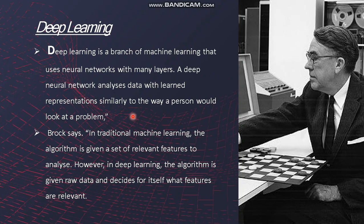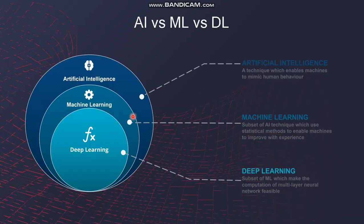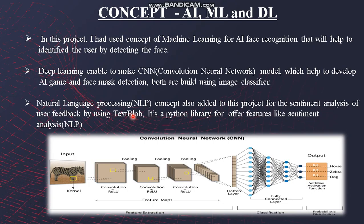Deep learning — it is a branch of machine learning. What we do is take a neural network which behaves like a human brain. It looks at a problem like a person looks at it. Suppose there is an image — we will easily recognize this is a zebra.